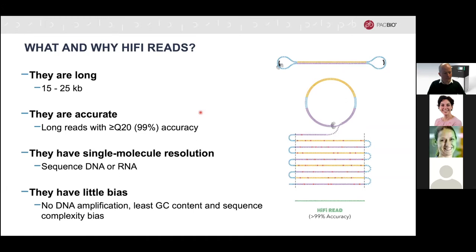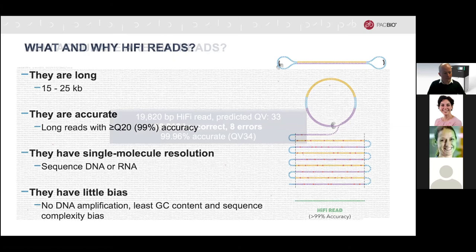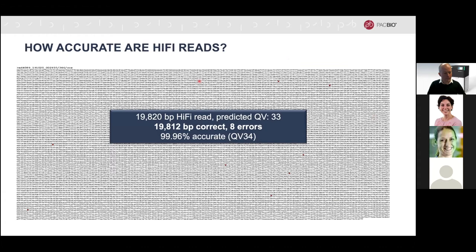HiFi reads are single molecule — every HiFi read comes from the same DNA fragment. This is allowed by the single molecule real-time sequencing technology through the zero-mode waveguide in the PacBio system. They have little bias — there is no DNA amplification involved for the standard protocol, no GC content bias, and sequence complexity bias is low. An example of how accurate HiFi reads are: shown here is an almost 20 kb long HiFi read with a predicted QV value of about Q33. This means there are only eight errors in the entire 20 kb read. This is really very exciting, because there's simply nothing that looks like this across the genomic sequencing landscape. One of the concerns often raised is cost — with the latest Sequel2 system, many applications can now be completed with a single 8M SMRT cell. For whole genome sequencing, you can assemble up to a two gigabase genome with one SMRT cell, and for RNA sequencing with a single SMRT cell, you can get a very good characterization of the transcriptomics landscape. The read length is routinely about 15 to 25 kilobases, and with one 8M SMRT cell you are able to achieve 20 to 30 gigabases of yield.